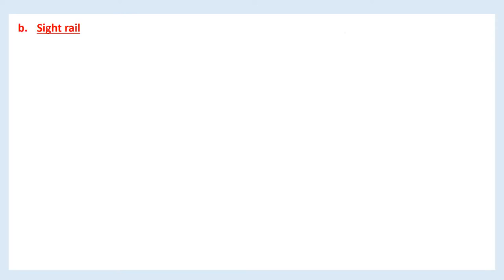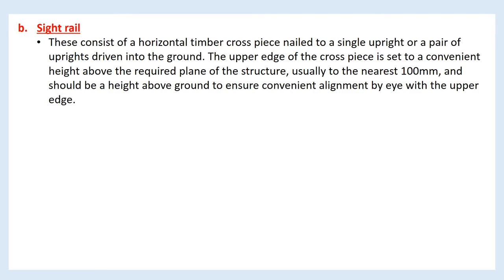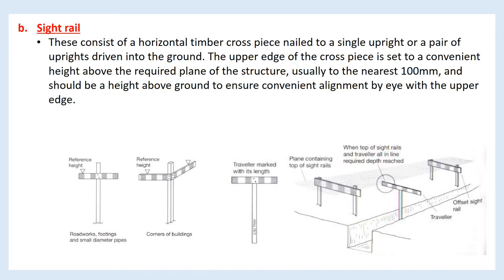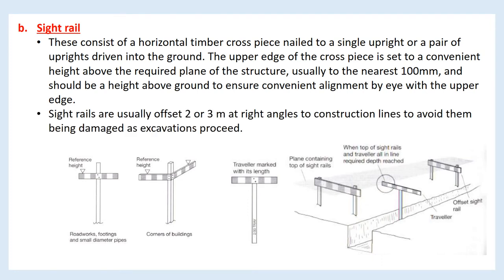Sight rails consist of a horizontal timber crosspiece nailed to a single upright or a pair of uprights driven into the ground. The upper edge of the crosspiece is set to a convenient height above the required plane of the structure, usually to the nearest 100 mm, and should be a height above ground to ensure convenient alignment by eye with the upper edge. Sight rails are usually offset 2 or 3 meters at right angles to construction lines to avoid being damaged as excavations proceed.